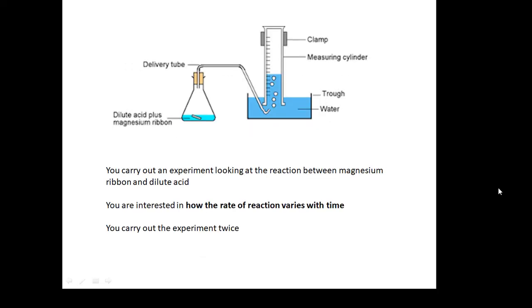Consider this. You're going to carry out an experiment looking at the reaction between magnesium ribbon and dilute acid. So you're going to put bits of magnesium in acid and you're going to collect the amount of gas given off. And you're interested in how the rate of reaction varies with time and you carry out the experiment twice.